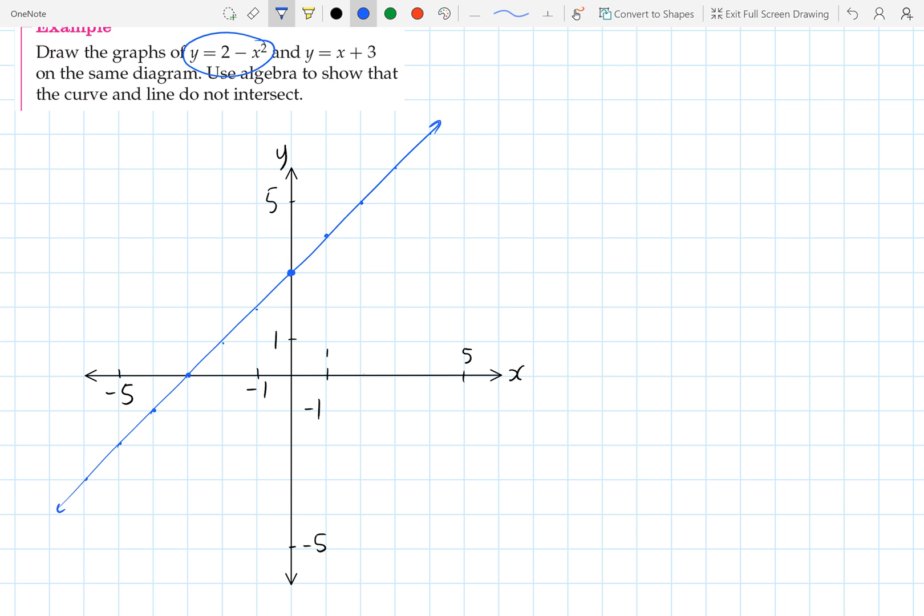Okay, and then we have our graph y equals negative x squared plus 2. So that's just passing through this point, and following our quadratic pattern, it's going to look like that. So it becomes apparent very early on here that these graphs in fact don't intersect. And that's what the question here is actually asking us to show algebraically that they don't intersect.